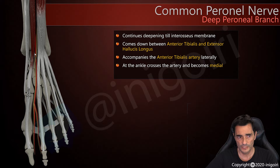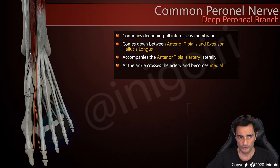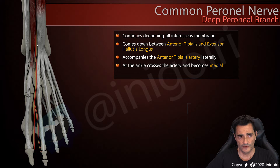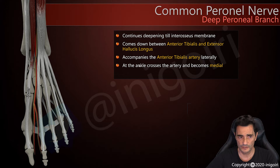We must always check the neurovascular bundle, which is located between the tibialis anterior tendon and the extensor hallucis longus tendon, in order to achieve a safe procedure. Interestingly, the deep peroneal nerve crosses the anterior tibial artery at this level — a curious anatomical finding, though not so critical in terms of diagnosis or prognosis.